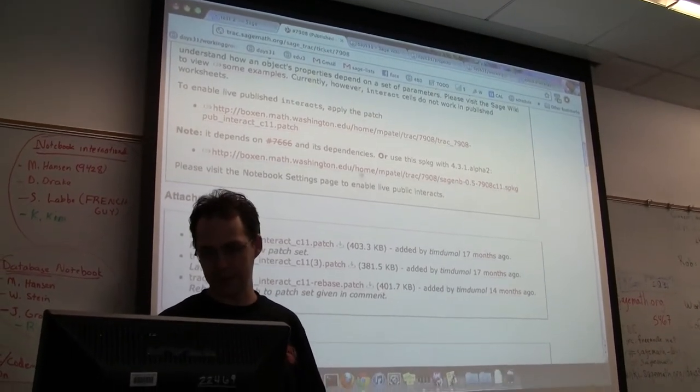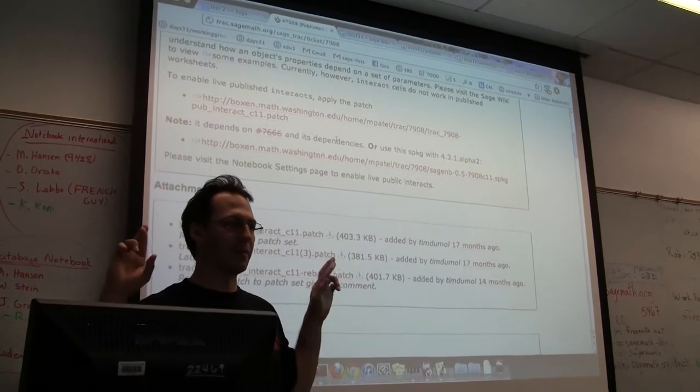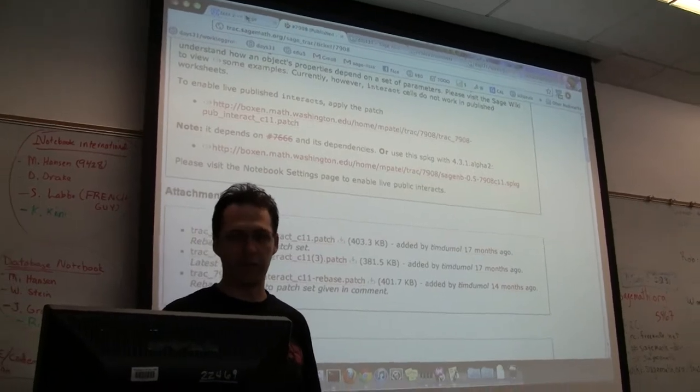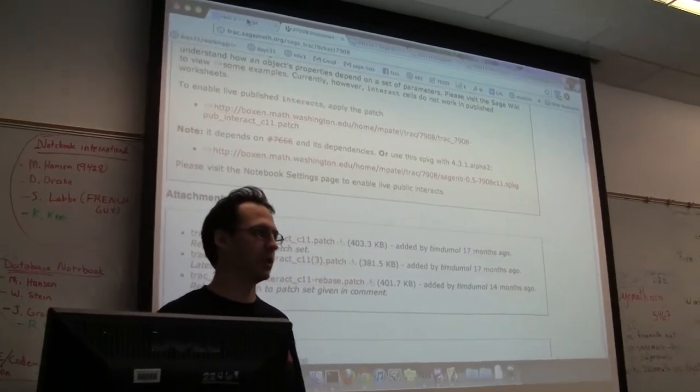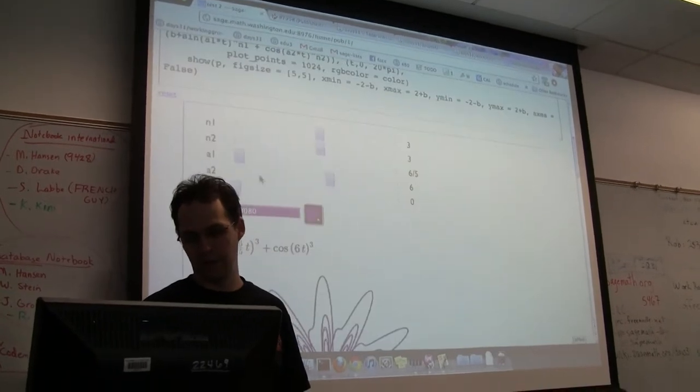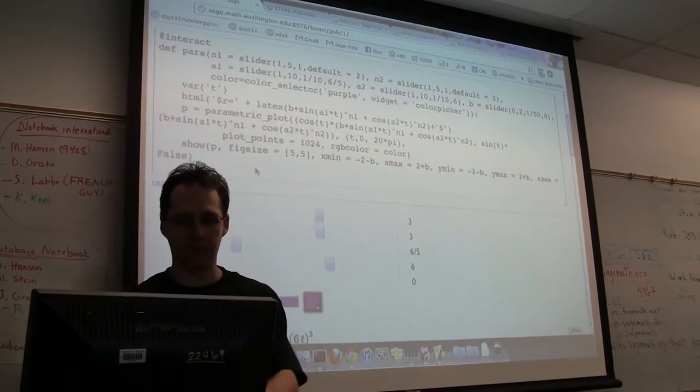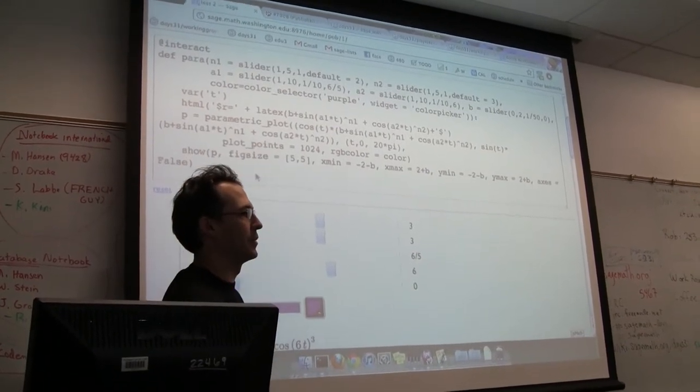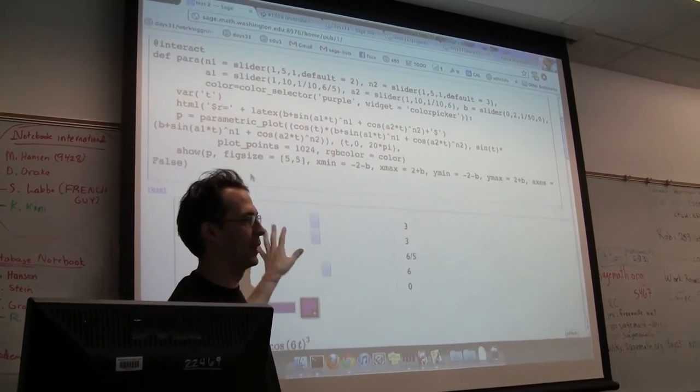So the upshot of all of this is that I cross my fingers that maybe by the end of the Sage days, it will be the case that the new Flask notebook server allows published interacts, which I think will be really useful. And you could also imagine not only having them be right here, but taking a little snippet of HTML and JavaScript, pasting it into your website, and then having this appear embedded in a website, independent of Sage.